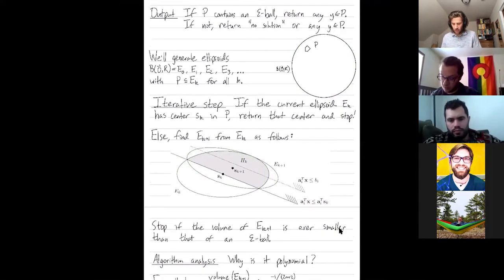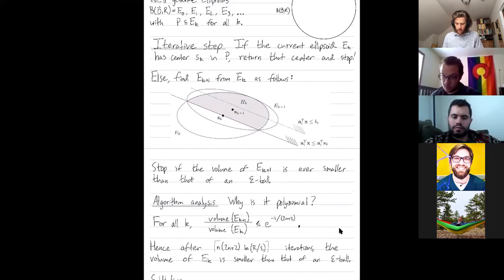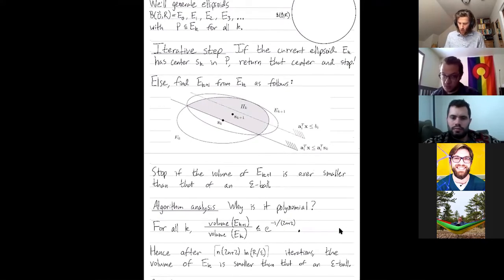You can prove that the ratio of the volumes from one ellipse to the next is sufficiently small. So the ellipses are getting small enough at a fast enough rate that you'll only have to take a polynomial number of steps. Polynomial in terms of n, the number of variables, and the input size.